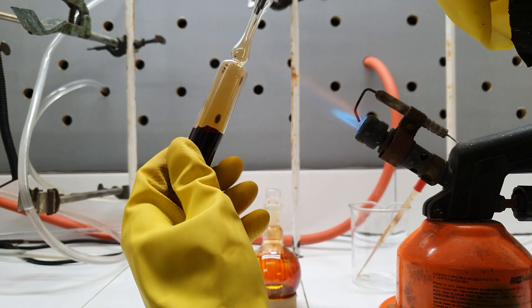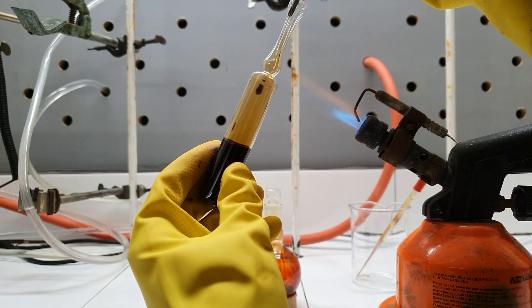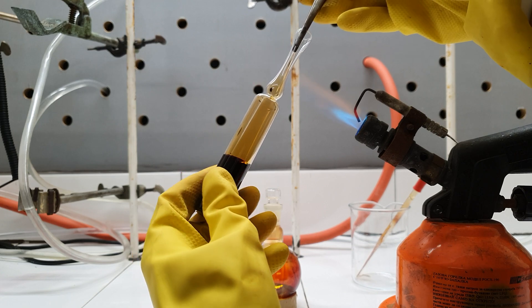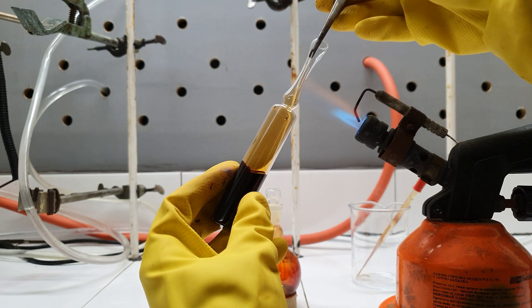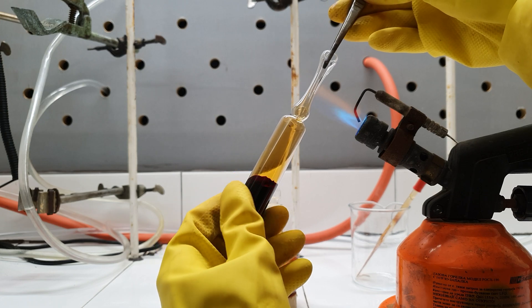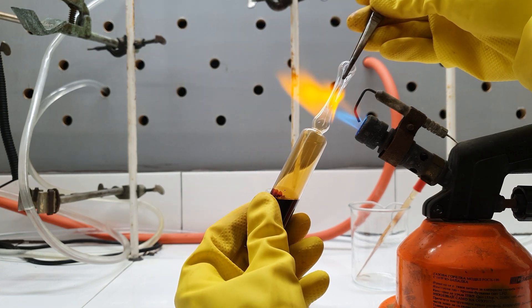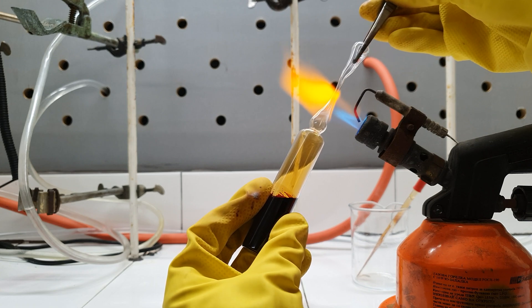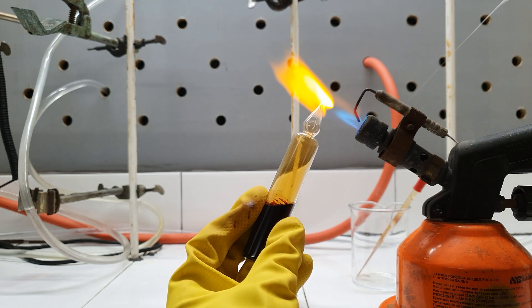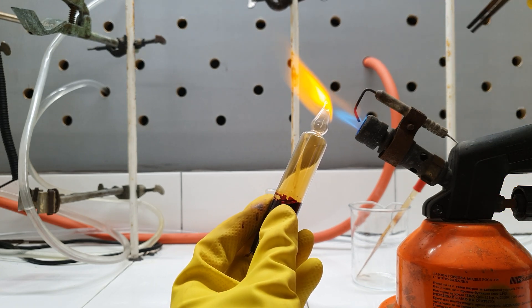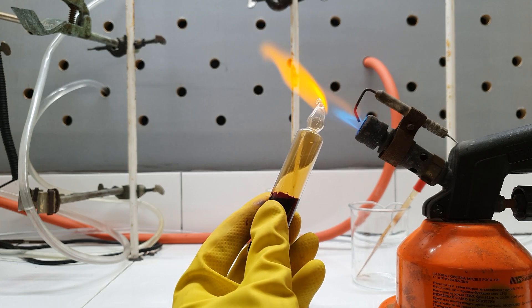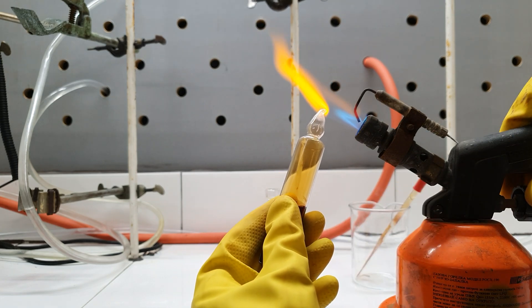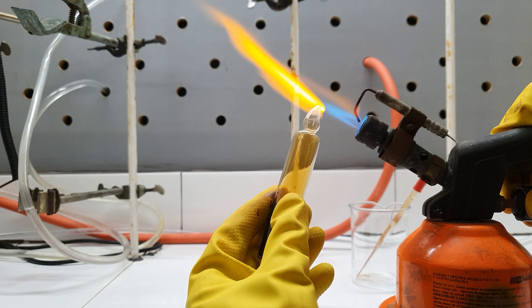To seal the ampule, I put it in the flame of my torch. It's important to constantly rotate the glass to ensure even heat distribution. When I felt the glass was soft enough, I pulled the top part with my pliers. The final step was making a well sealed top without sharp edges. This was done by placing the top part of the ampule in the flame.